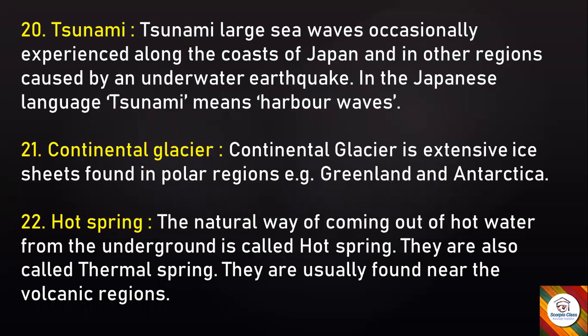Question twenty-one — Continental Glacier: A continental glacier is an extensive ice sheet found in polar regions; examples are Greenland and Antarctica. Question twenty-two — Hot Spring: The natural coming out of hot water from underground is called a hot spring, also known as a thermal spring. They are usually found near volcanic regions.